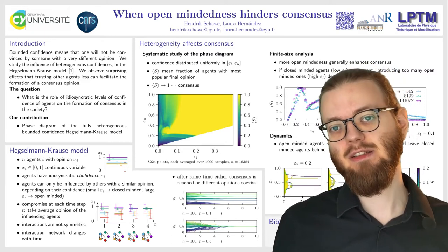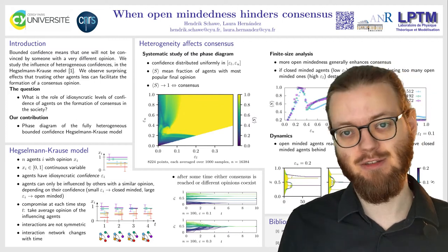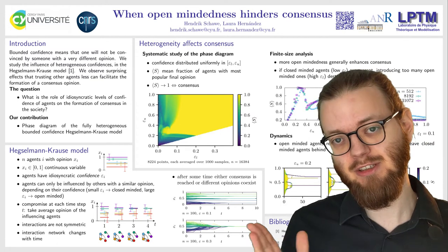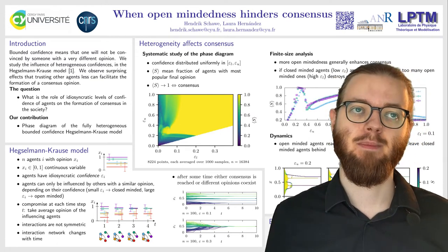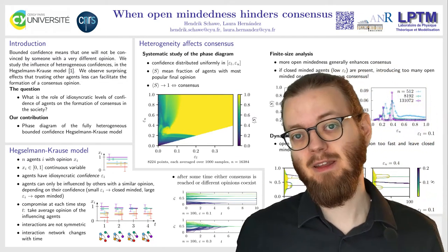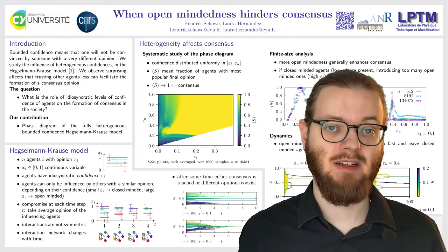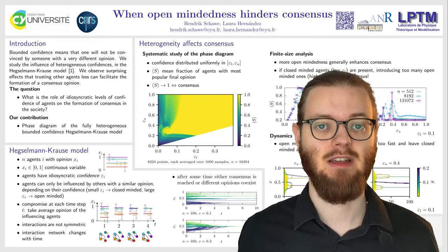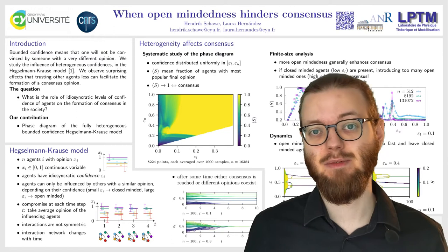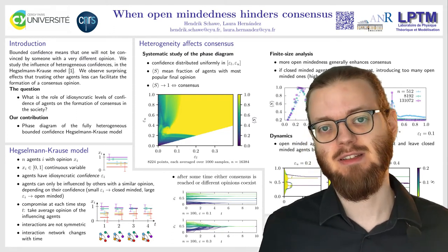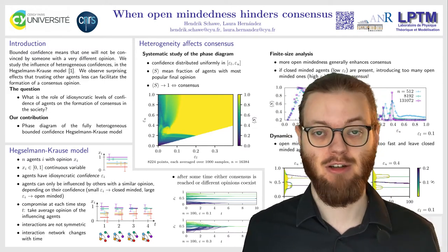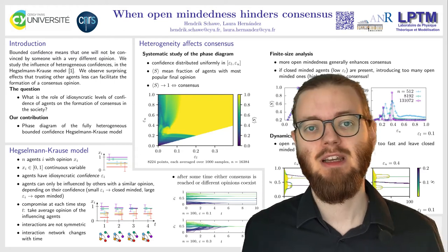This model tends to form consensus if this confidence range is large enough. Below some critical threshold of this confidence range, your opinion landscape fragments into many different opinions. This is mostly studied on homogeneous societies where every single agent has the same confidence range. What we did is we studied this in a fully heterogeneous society where each individual has its own confidence, drawn uniformly in some range.